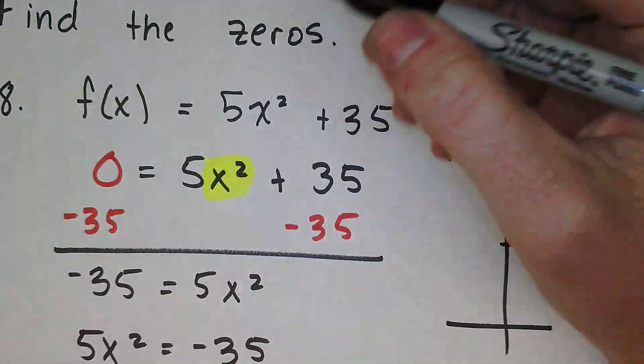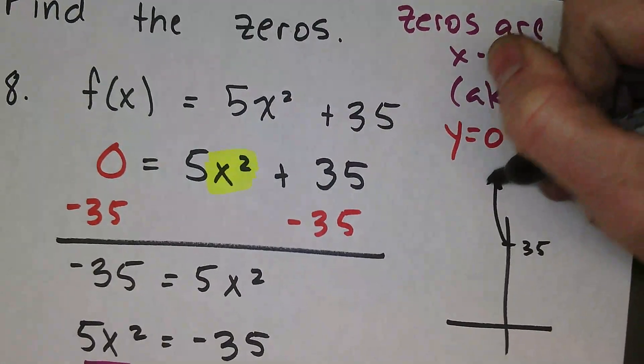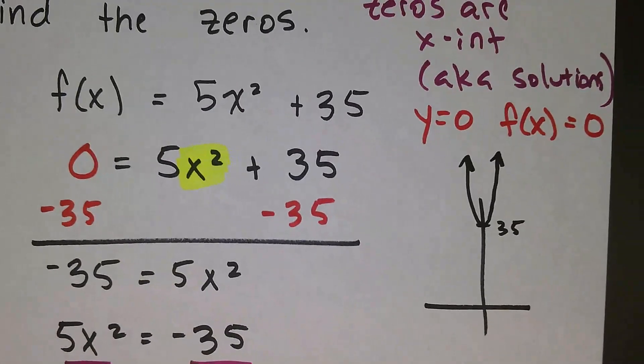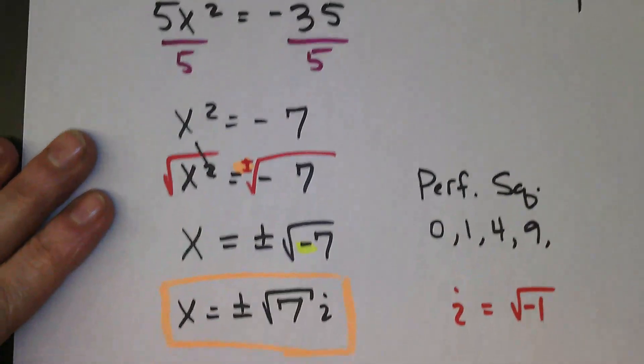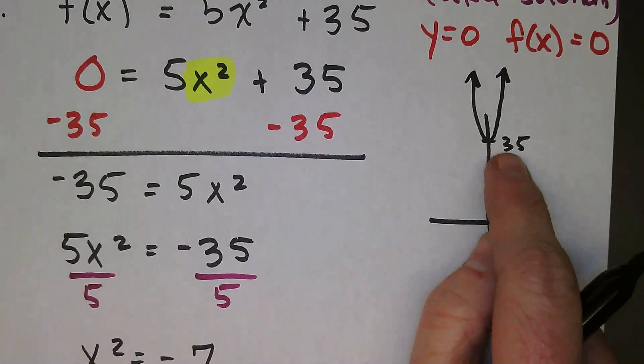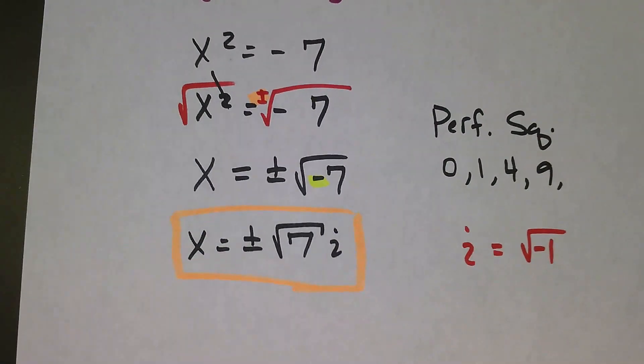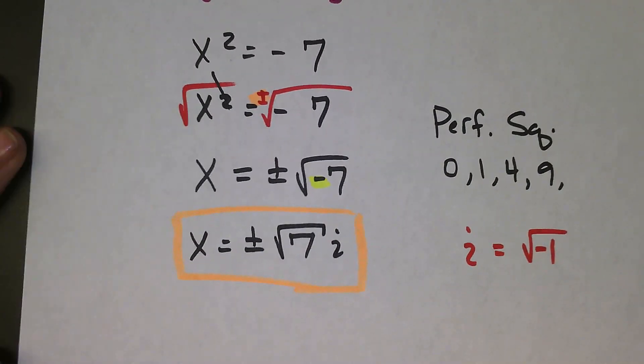And there's a vertical stretch by a factor of 5. So it's a very tall and skinny graph with a y-intercept of 35. It makes sense that I have a complex solution because there are no real x-intercepts. That's my answer, and it fits the knowledge I'm bringing to the table.